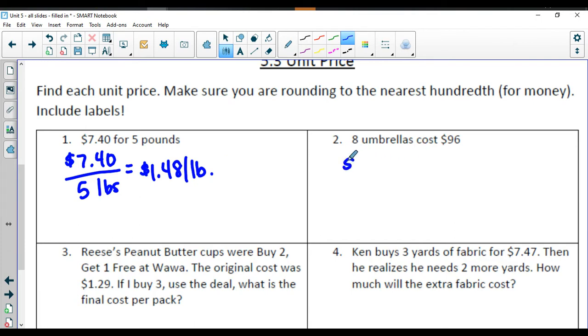In number 2, eight umbrellas cost $96. So the money comes first, divided by the eight umbrellas. $96 divided by 8 is going to give me $12 per umbrella.